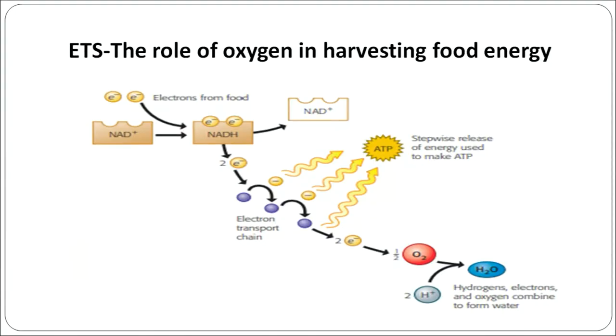The reason a person deprived of oxygen cannot survive is that without oxygen, there is no hydrogen transfer in the respiratory chain and the person will eventually die. For example, if a person drowns for a long time, the cells are deprived of oxygen, which is essential for accepting the energy-rich hydrogen ions and electrons. If this pathway breaks, no energy transfer takes place and the cells become lifeless.